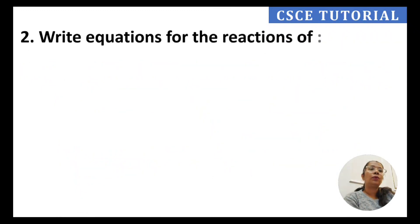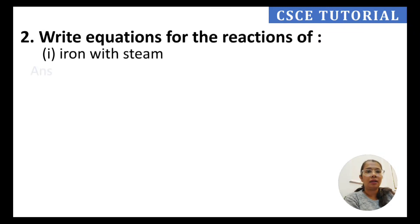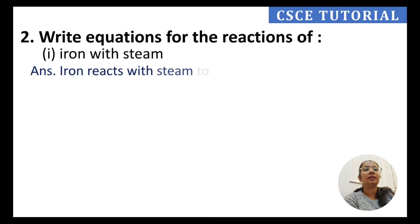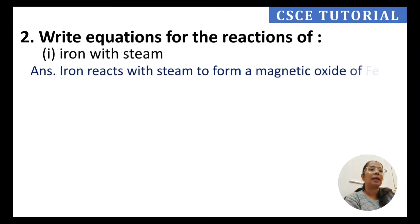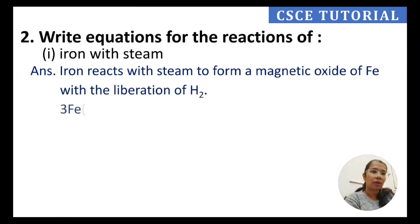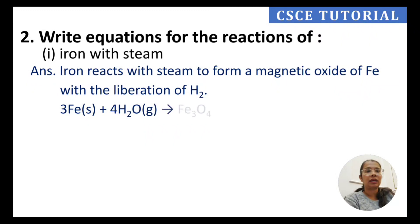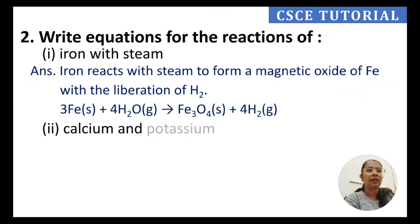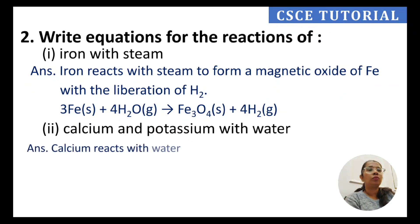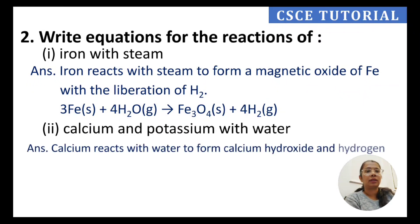The second question asks to write equations for reactions. First: iron reacts with steam to form magnetic oxide of iron (Fe₃O₄) with the liberation of hydrogen gas. This reaction shows how iron reacts with water to form ferrous oxide — specifically the magnetic oxide — and hydrogen gas is released.